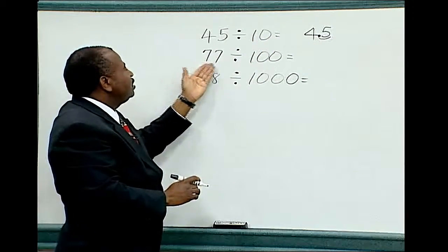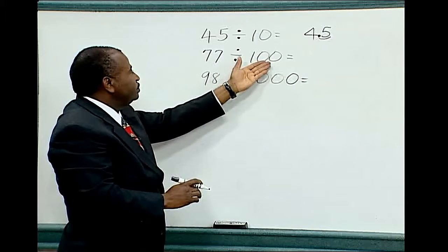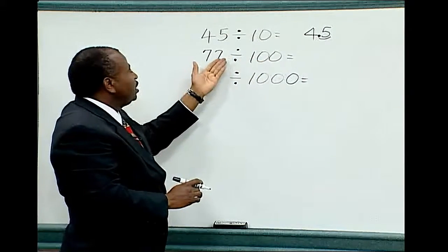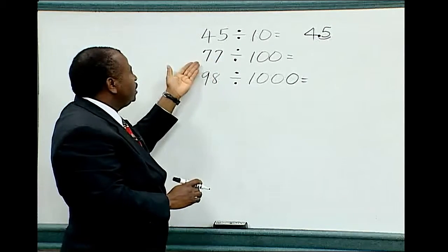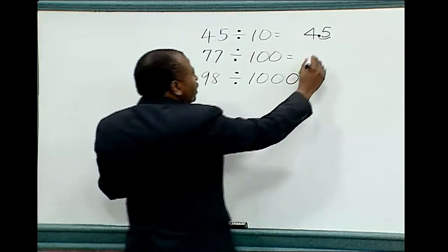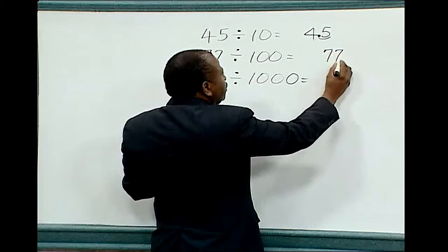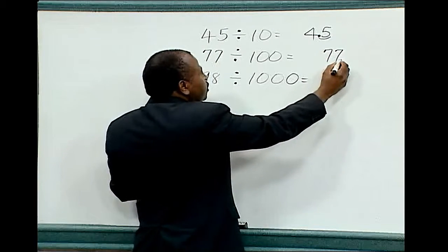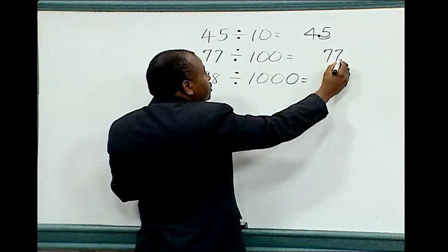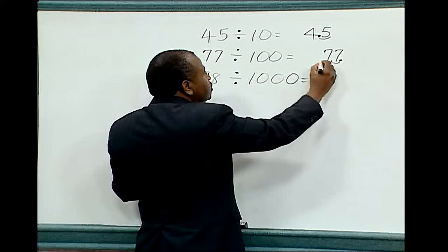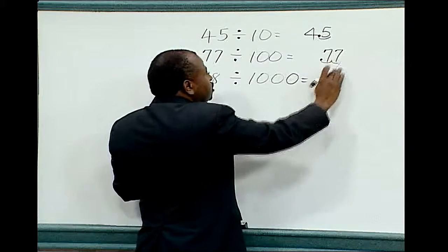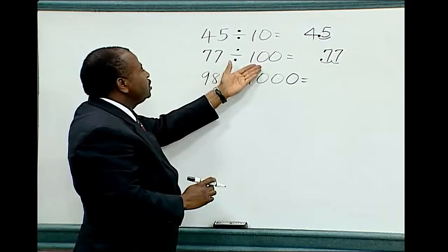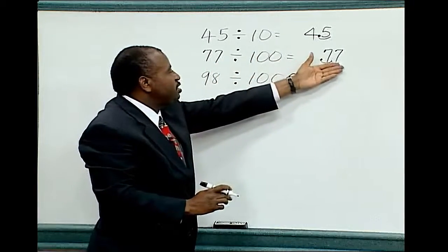Seventy-seven divided by one hundred. The one hundred contains two zeros. Therefore, the decimal point must be moved two places to the left. Seventy-seven — the decimal point is understood to be behind the second seven. Therefore, we must move it two places to the left: one, two. Erase the original decimal point. Therefore, seventy-seven divided by one hundred is equal to point seven seven.